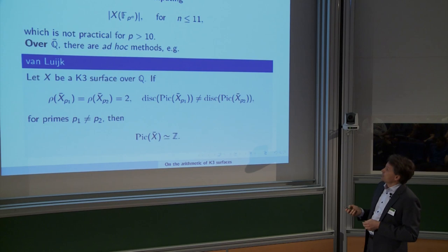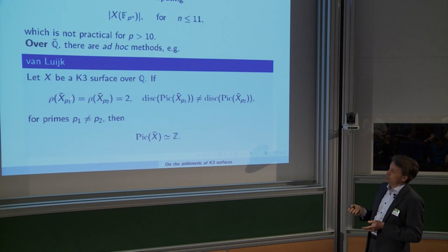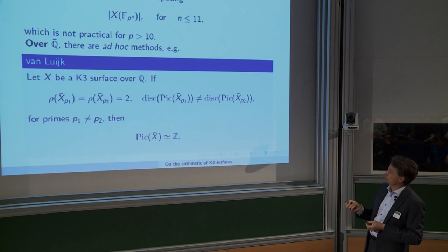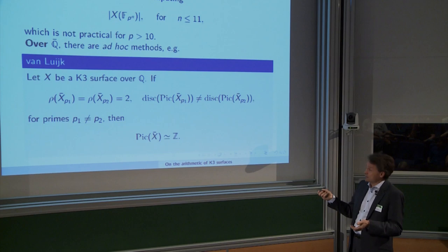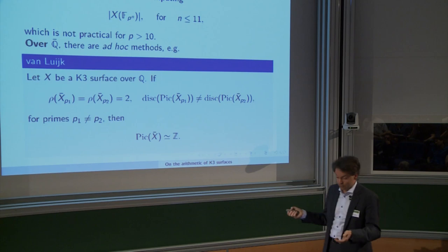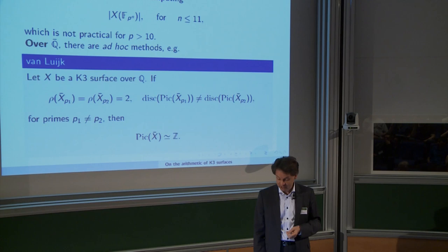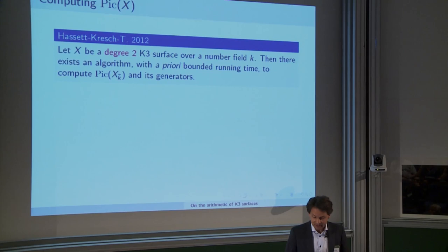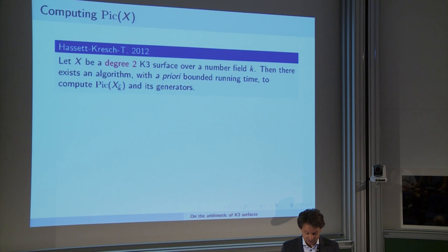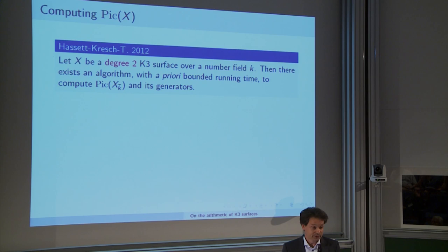Over Q-bar there are some ad hoc methods. If by miracle we have a K3 where at one prime we have Picard rank 2 over F_p-bar and at another prime Picard rank 2, but the discriminants of those lattices don't match modulo squares, then we are forced to have Picard rank 1 over Q-bar due to lattice compatibility. Van Luijk has produced infinitely many examples of quartic K3s over the rationals with geometric Picard rank 1. Kresch, Hassett, and I proved there is an algorithm with a priori bounded running time to compute Picard rank and all generators, currently only in degree two.